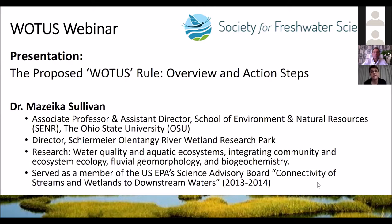Majeka is an associate professor and assistant director for the School of Environment and Natural Resources at The Ohio State University, and director of the Schirmeyer-Ollentange River Wetland Research Park. His research works on water quality and aquatic ecosystems generally, integrating community and ecosystem ecology, fluvial geomorphology, and biogeochemistry. Most relevant to today, he served as a member of the USEPA Science Advisory Board on the Connectivity of Streams and Wetlands to Downstream Waters document, reviewing that document in 2013-2014.